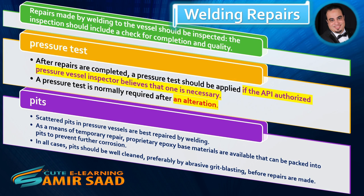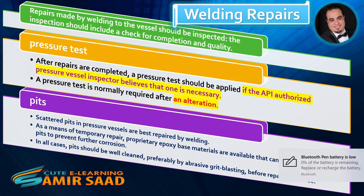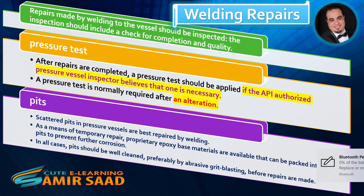Pits: Scattered pits in pressure vessels are best repaired by welding. As a means of temporary repair, proprietary epoxy base materials are available that can be packed into pits to prevent further corrosion. In all cases, pits should be well cleaned, preferably by abrasive grit blasting, before repairs are made.